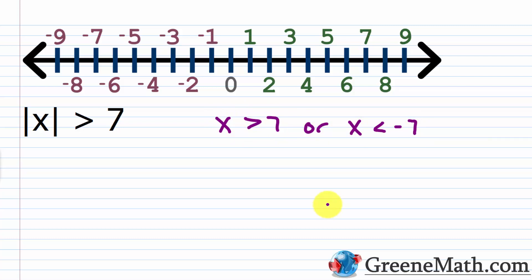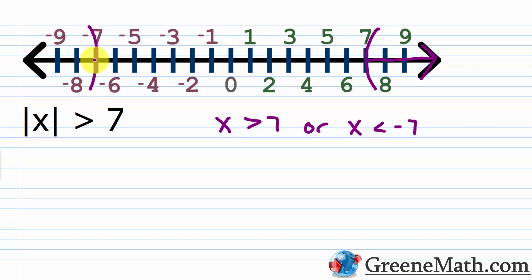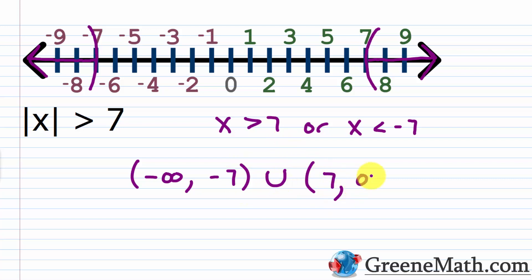Graphically, it's easy to figure this out — I'm thinking about what values for x have a distance from zero greater than 7. If I start at zero and go seven units to the right, it can't be seven itself, but it can be anything larger, so I put a parenthesis at seven and shade everything to the right. Same thing in the other direction — parenthesis at negative seven, shade everything to the left. In interval notation: from negative infinity up to but not including negative seven, union with seven not included out to positive infinity.